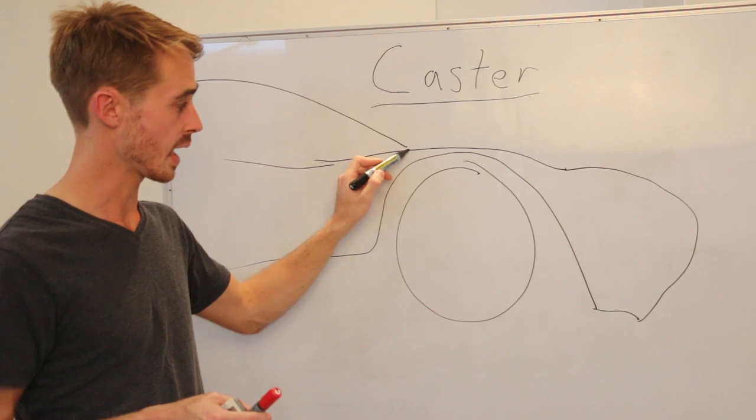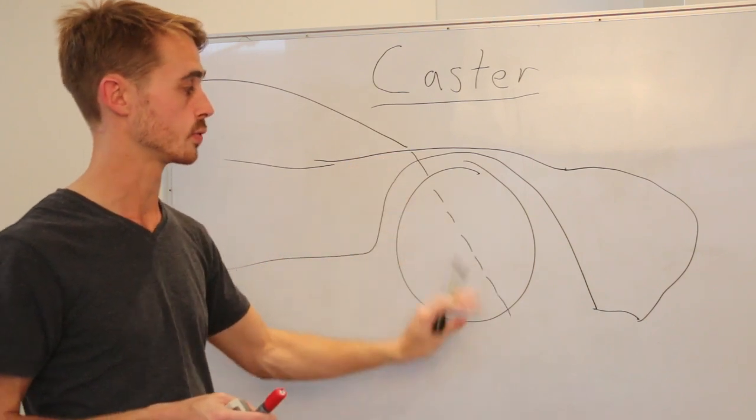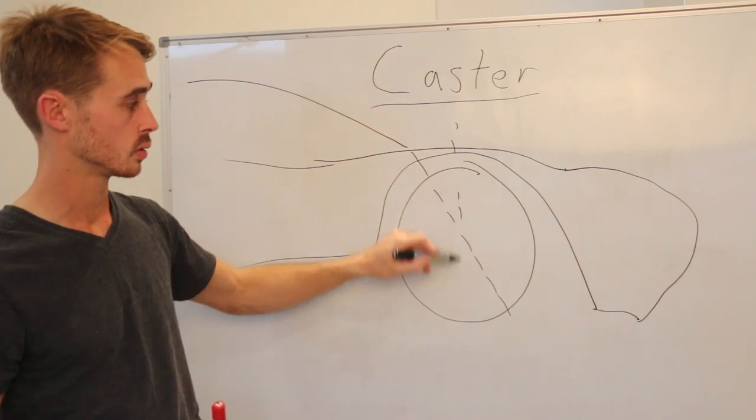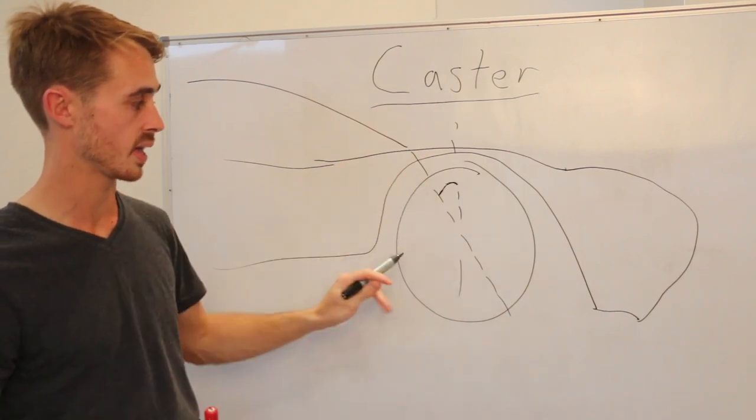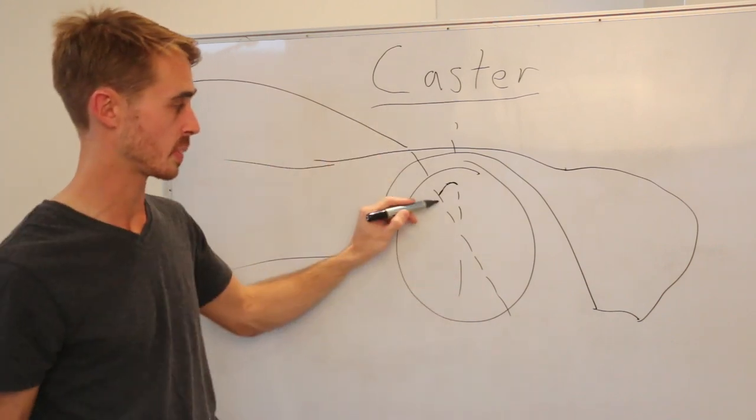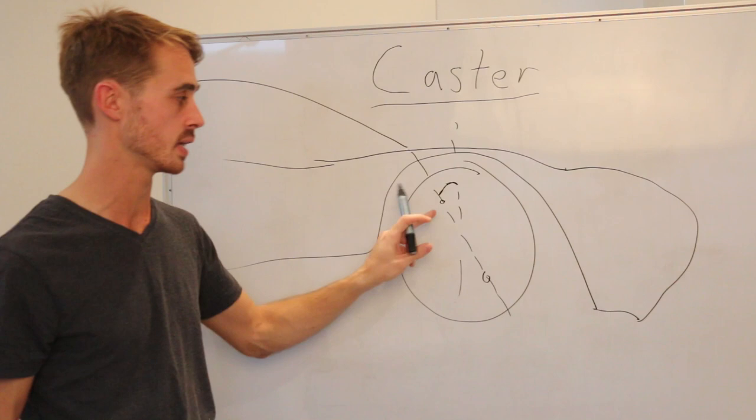Caster is basically the angle around which the wheel assembly pivots with respect to the vertical. So that angle there. So we incline our angle of rotation whether that's by picking double A arm pick up points there and there.